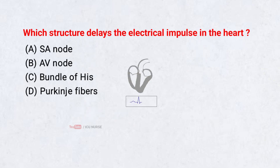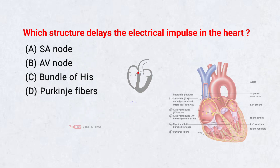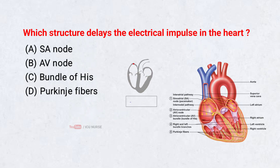Which structure delays the electrical impulse in the heart? Correct answer B: AV node.